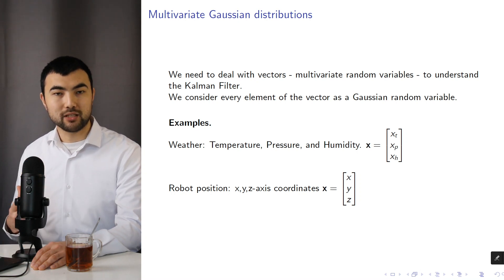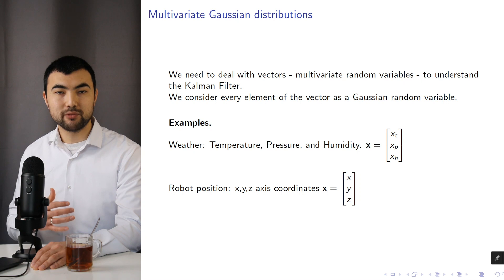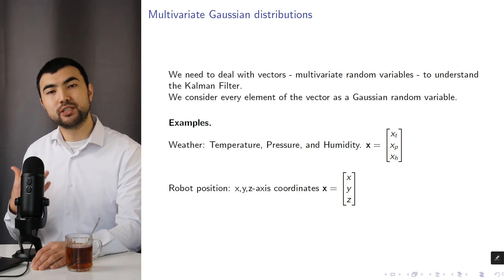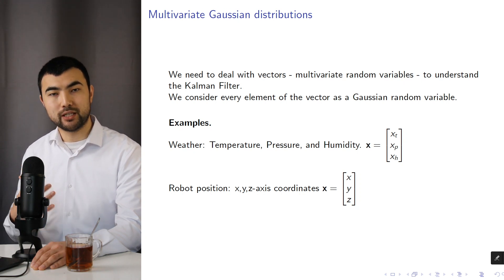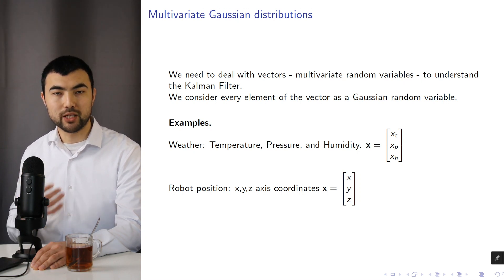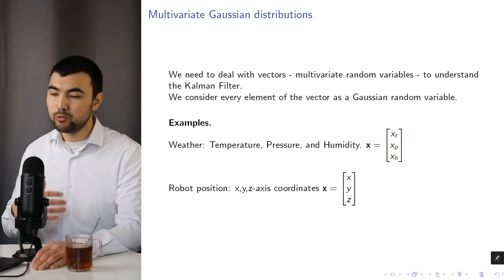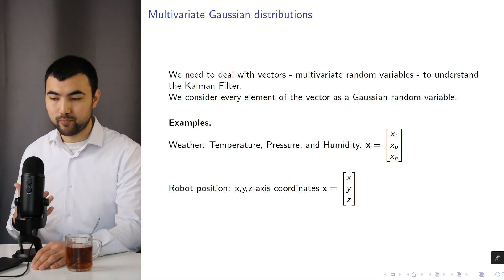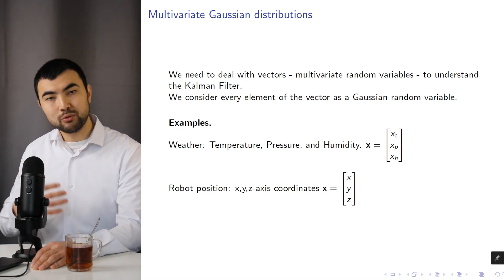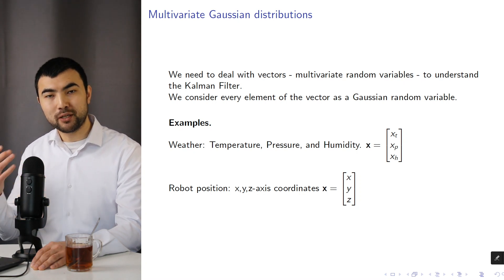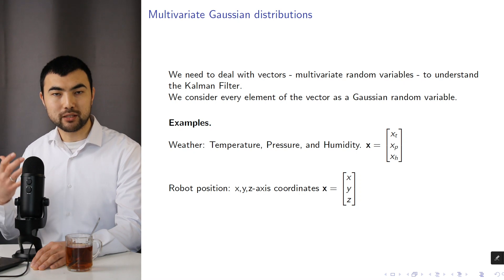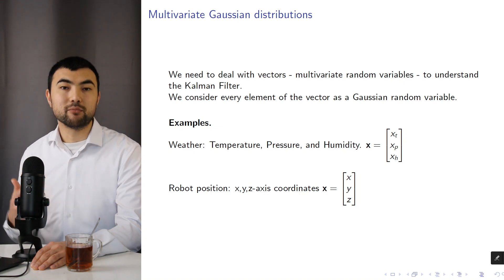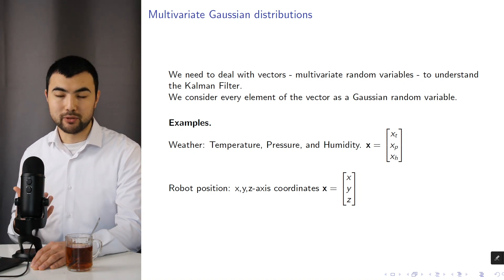As we discussed in the last video, we have to deal with vectors and multivariate random variables to understand the Kalman filter. And to avoid jumping into complex topics, let's consider some simple examples.